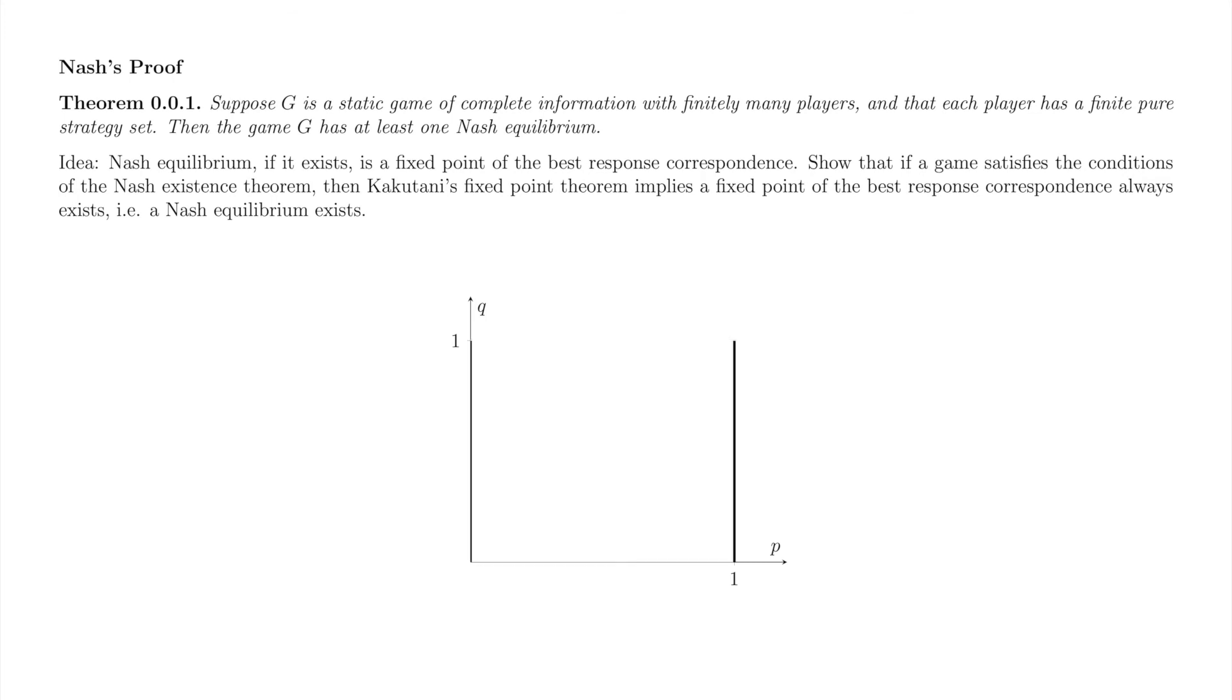Similarly, player two's best response function is continuous, and connects the two thick black lines on the left and right of the square. Player two needs to pick q to best respond to p equals zero. All such q get graphed on the left black line. Player two needs to pick q to best respond to p equals one, and all of these q get graphed on the right black line. Continuity approximately follows from the idea that small changes in p result in small changes in player two's best response.